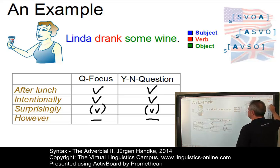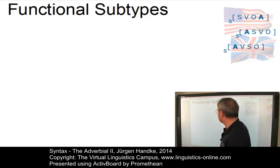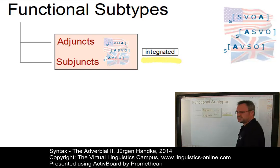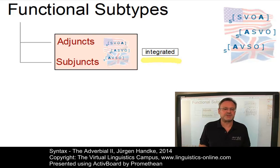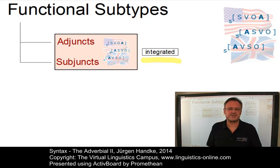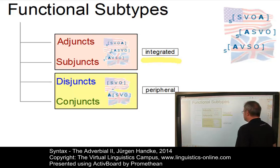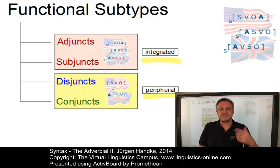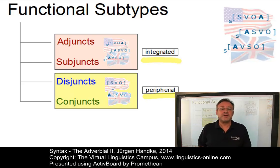Let's look at these functional subtypes first. Generally, we can divide the class of adverbials into two general subtypes: a class of adverbials that are fully integrated into the structure of their clause — that is, they are on par with the other elements of clause structure. Depending on the degree of integration, we can define two subtypes: adjuncts and subjuncts, where subjuncts are less integrated. The second subtype is peripheral to clause structure, subdivided into disjuncts and conjuncts, where conjuncts primarily have a connective function.